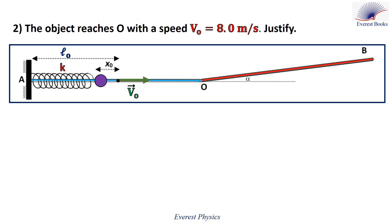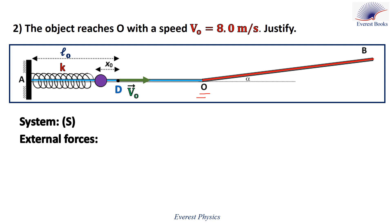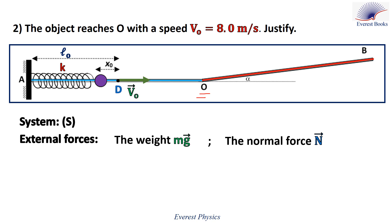Moving to Part A2: the object reaches O with a speed v0 of 8 meters per second — justify this. The object leaves the spring at point D with speed v0, and we want to prove it reaches point O with the same speed. The external forces acting on the object during motion between D and O are the weight mg and the normal force N. However, both mg and N are vertical forces, so they do not contribute to the horizontal motion along DO.